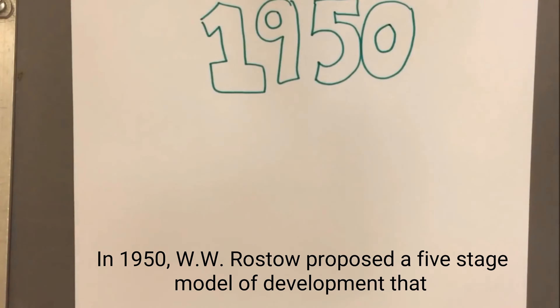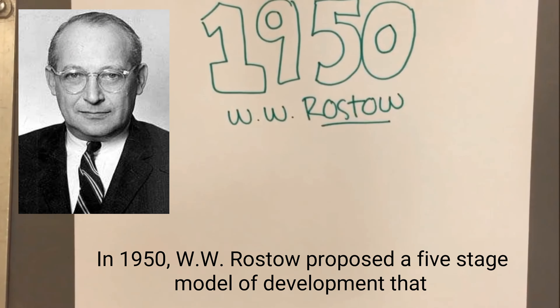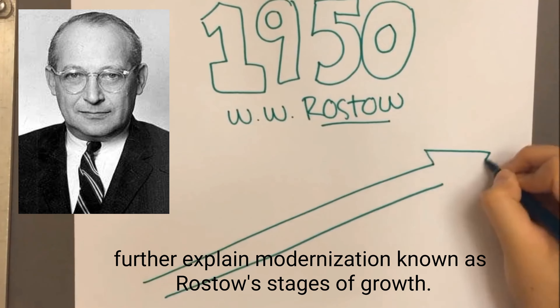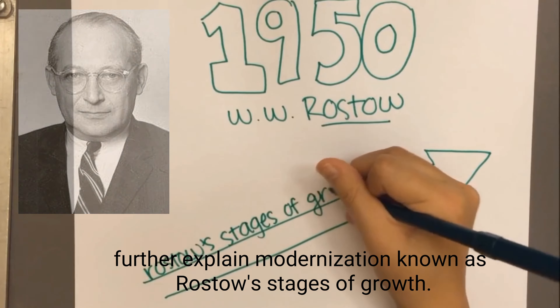Tractors, combines, plows and more are much larger and move much faster than horses, so farmers are able to produce more food in a shorter amount of time. In 1950, W.W. Rostow proposed a five-stage model of development that further explained modernization, known as Rostow's Stages of Growth.